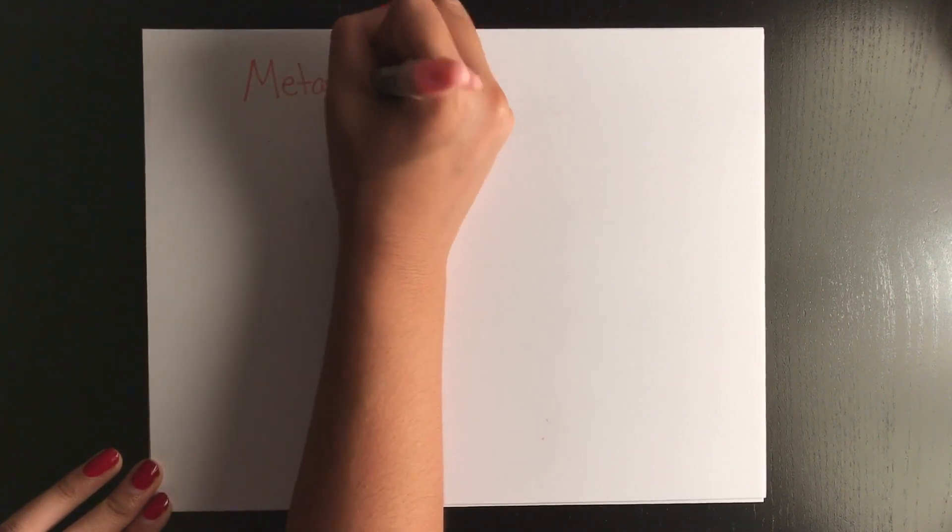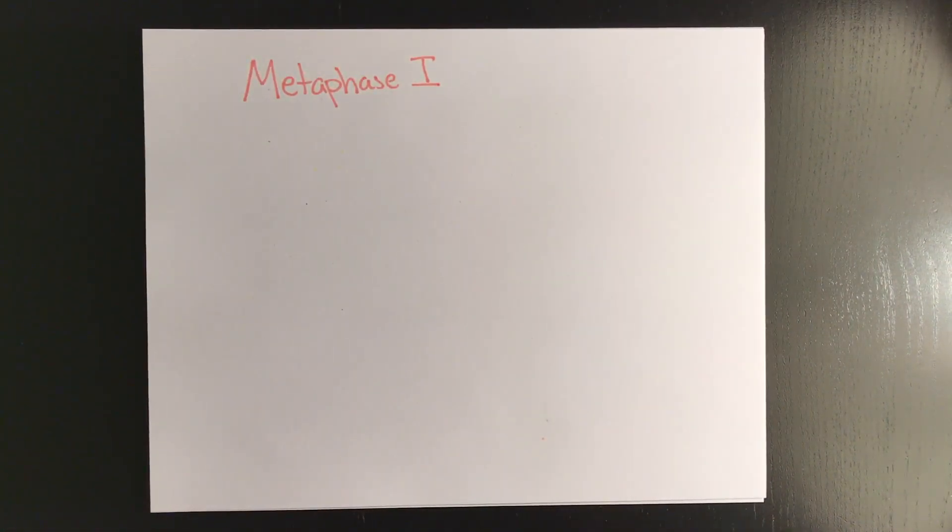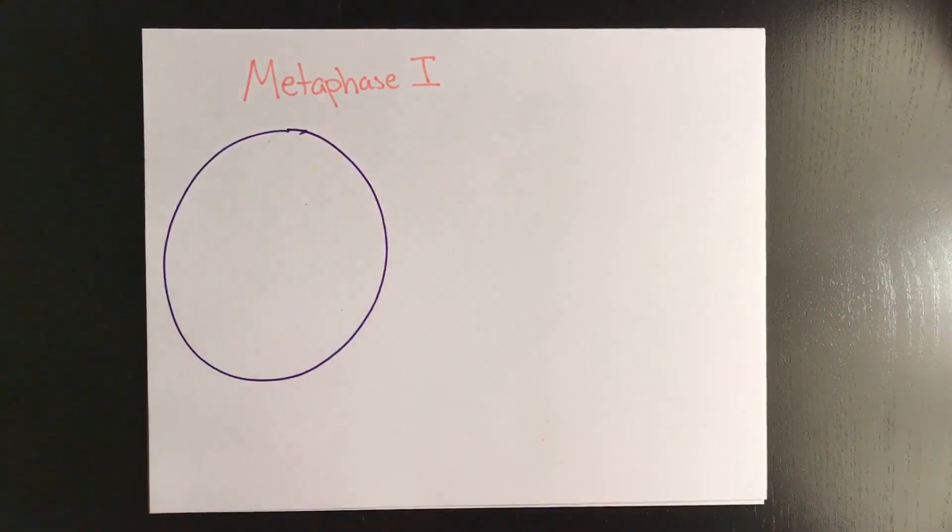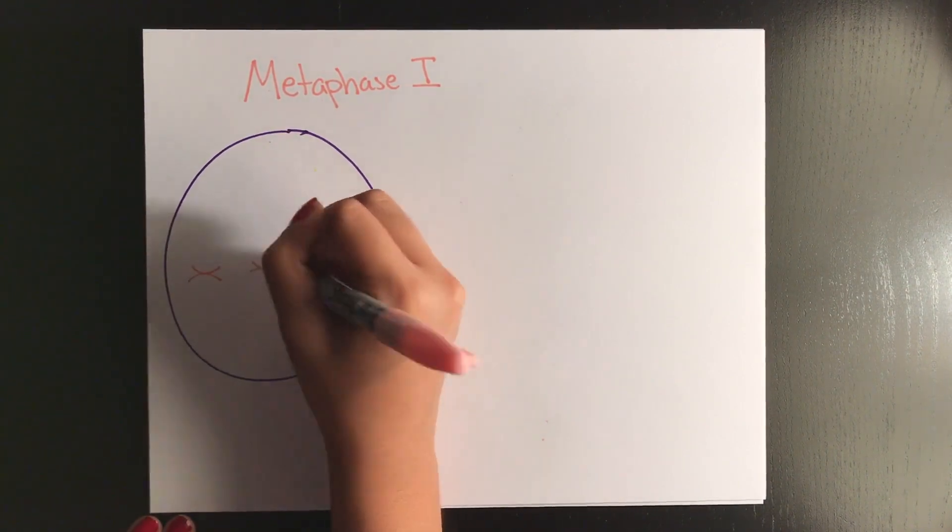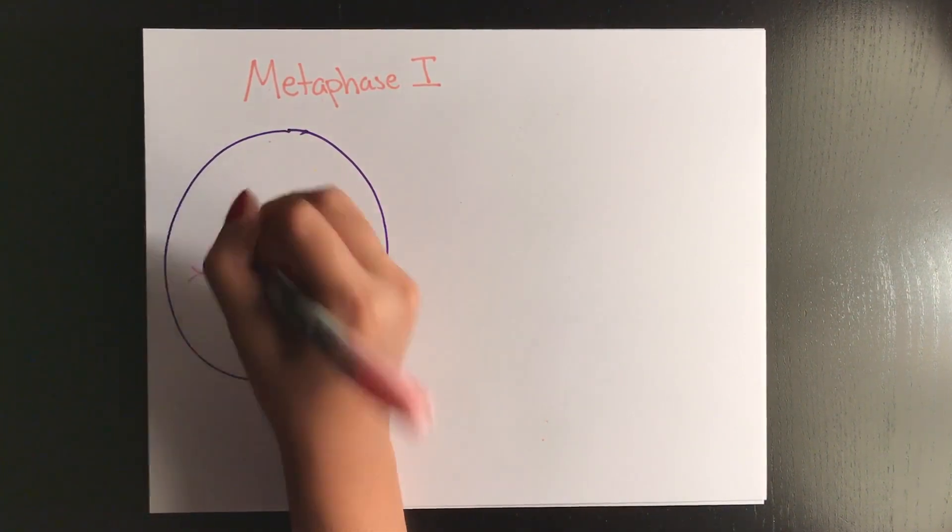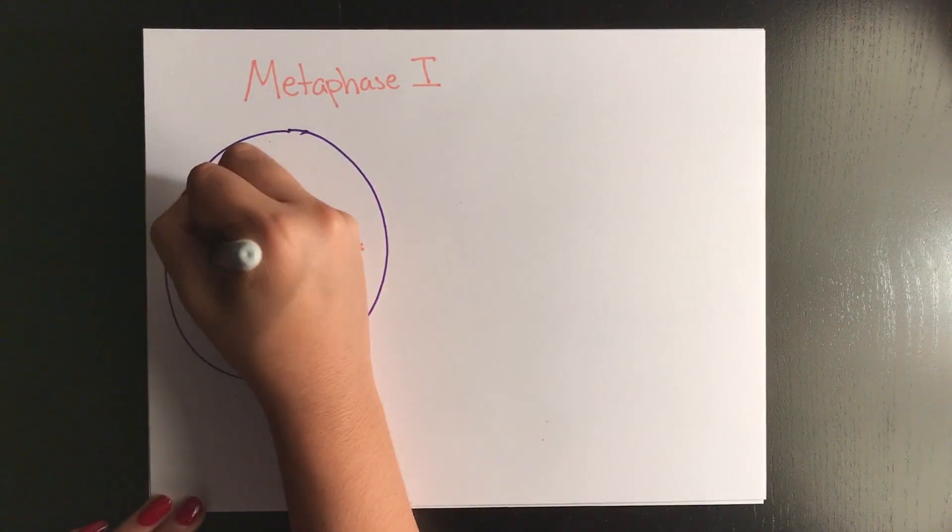Metaphase 1 is when the chromosomes line up at the equator of the cell, and they continue to stay in their homologous pairs. This is different from mitosis, when you just have sister chromatids lining up. Now it's two pairs of chromatids.